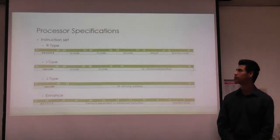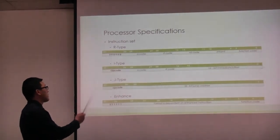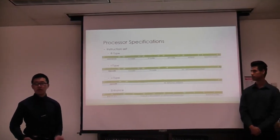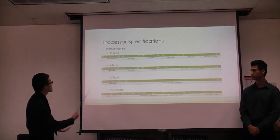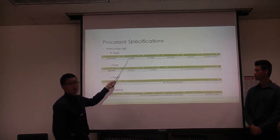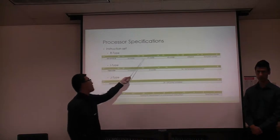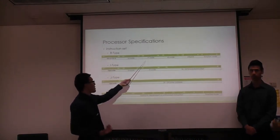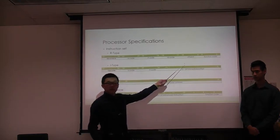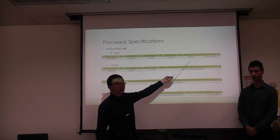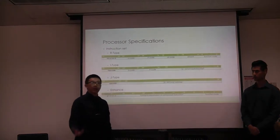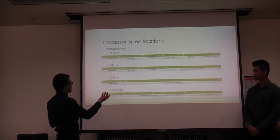Our processor has four different instruction formats. For R-type instructions, the top six bits are all zeroed out, followed by RS, RT, and the destination register RD, the shift amount field, and finally the function code to distinguish the correct R-type instruction. We do incorporate a barrel shifter so the shift amount field will be used.